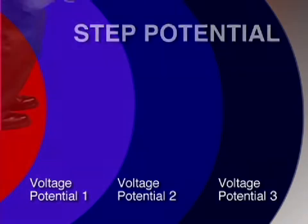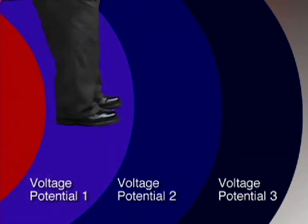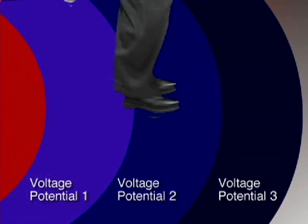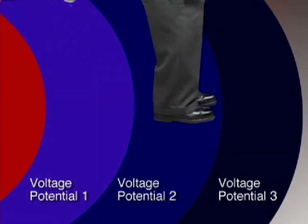You want to avoid becoming part of that path to ground at all costs. Remember, electricity travels at the speed of light — 186,000 miles per second. At that speed, our reflexes simply are not fast enough to avoid serious injury. We'll talk more about this later.